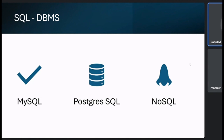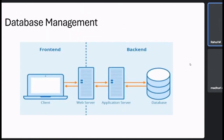RDBMS means the tables are connected through relationships. DBMS is a database management system with tables, while RDBMS adds relationships between those tables — and we'll get into how to connect them using those relationships.